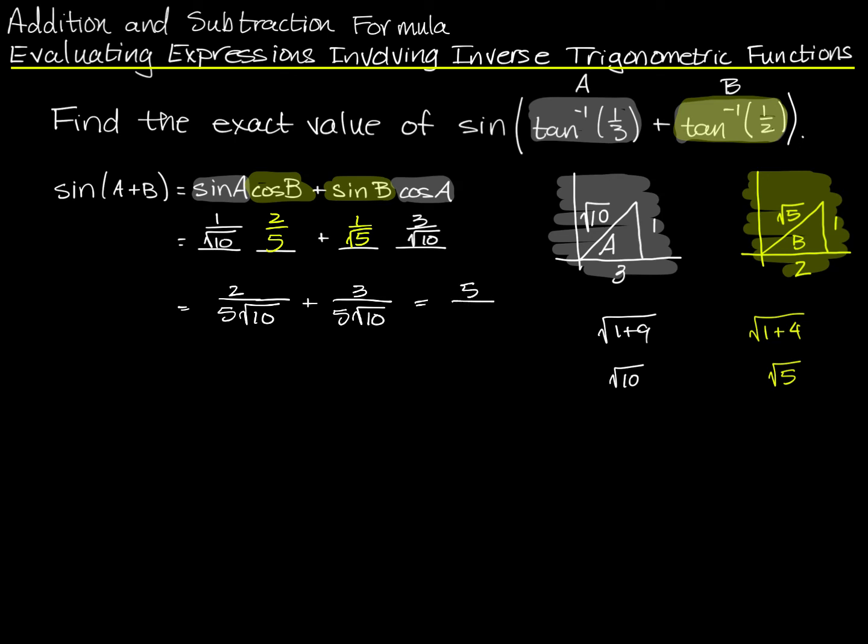And then I have two over five root ten plus three over five root ten, which is five over five root ten, which is one over root ten. And there's my exact value.